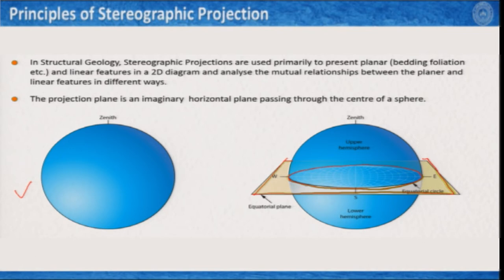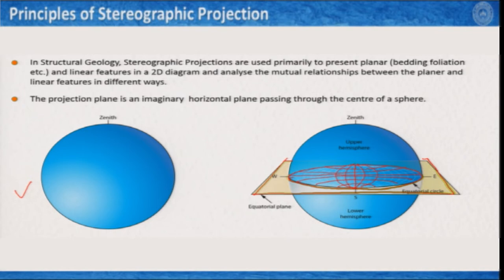This circle is also known as the primitive circle. As you can see, these are great circles on different sides and these are small circles running from west to east. We will now see how, using this concept of stereographic projection, we can plot a line, plot a plane, and also learn how to plot the normal of a plane in the stereonet.